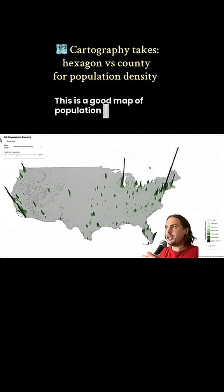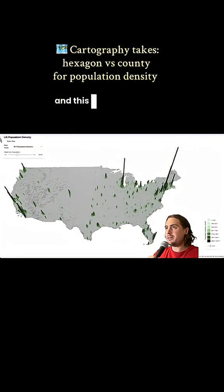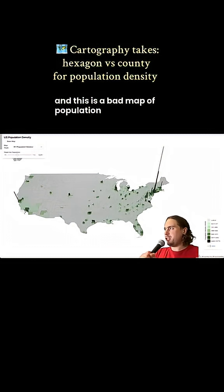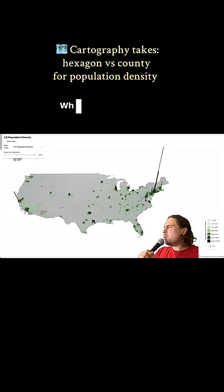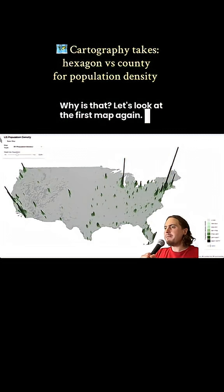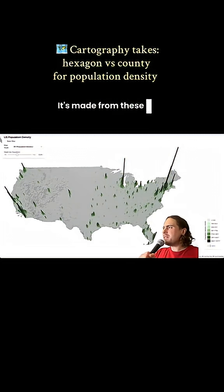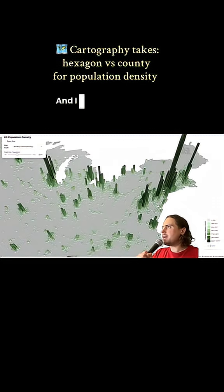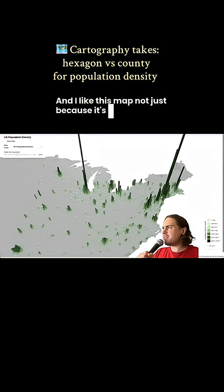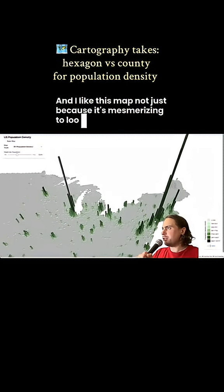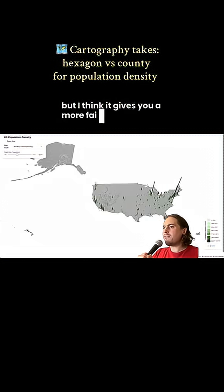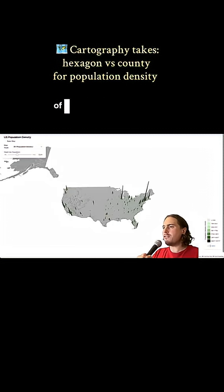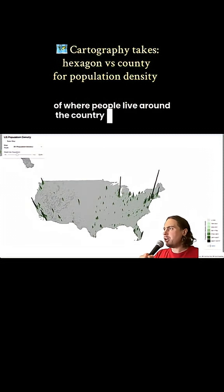This is a good map of population density in the U.S., and this is a bad map of population density in the U.S. Let's look at the first map again. It's made from these little hexagons called H3 cells, and I like this map not just because it's mesmerizing to look at, but I think it gives you a more fair picture of where people live around the country, as compared to this second map.